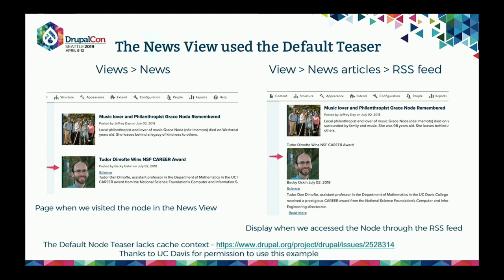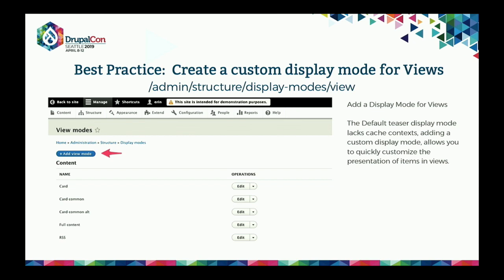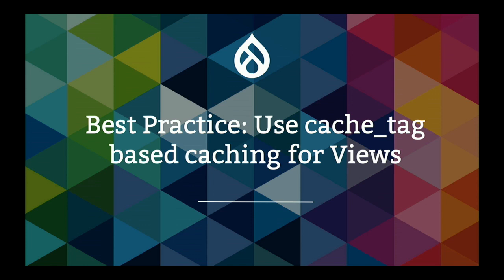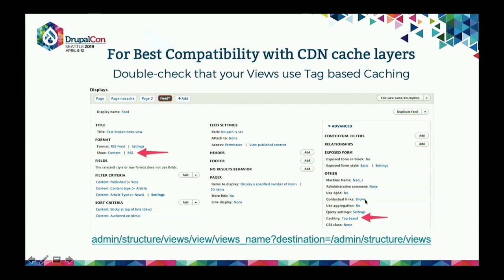You can solve it in two ways: create a custom display mode — that's the easiest — or change the format you're using away from the default. Umami has examples of a few that are styled out. Also, just double-check your views — it's like this by default, but make sure that when caching, you're using tag-based caching so it can be picked up by your CDN layers. Even if you don't have a CDN, tag-based caching works really well.